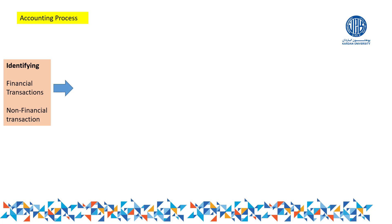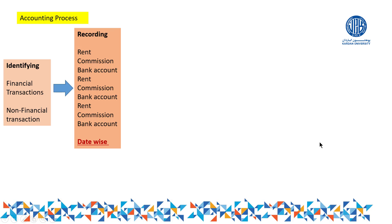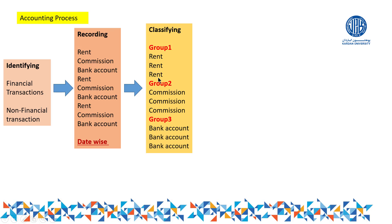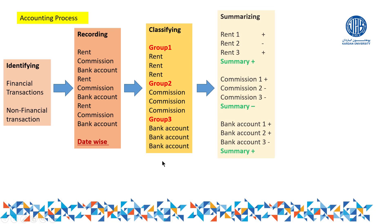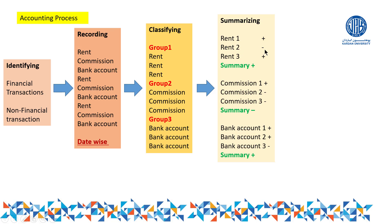After identifying, step of recording: suppose transactions were regarding rent, commission, and bank account. We recorded rent, commission, and bank account transactions by date wise. After recording, we classify: group one includes all rent transactions, group two all commissions, group three all bank account transactions. Then in step three — summarizing — rent one is positive, rent two is negative, rent three is positive — the summary is positive.